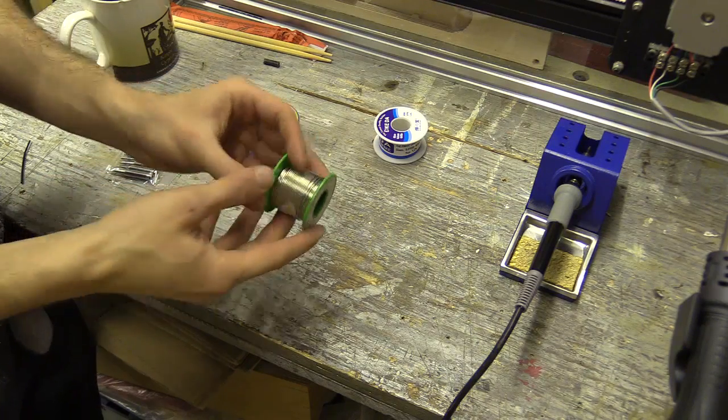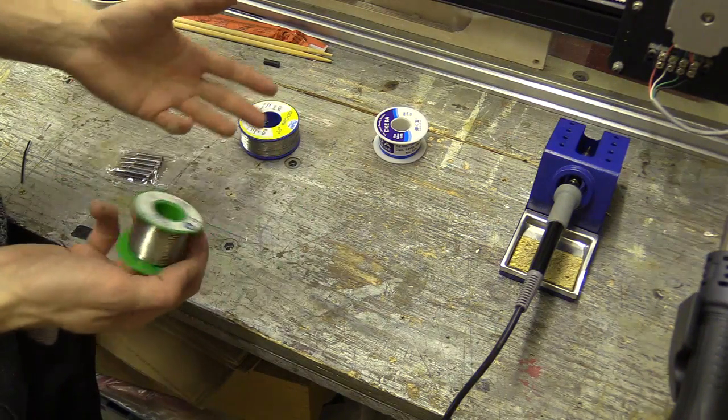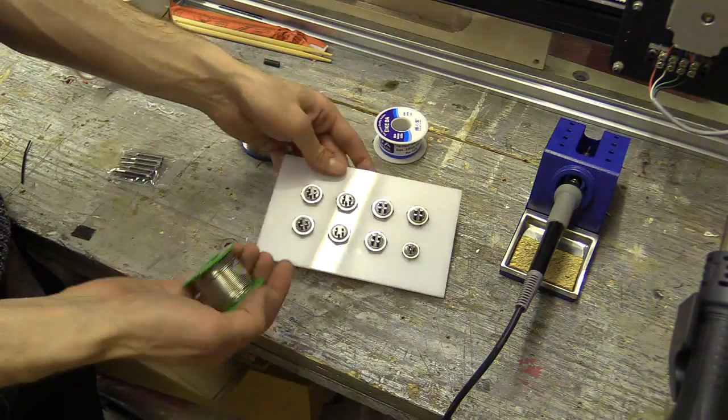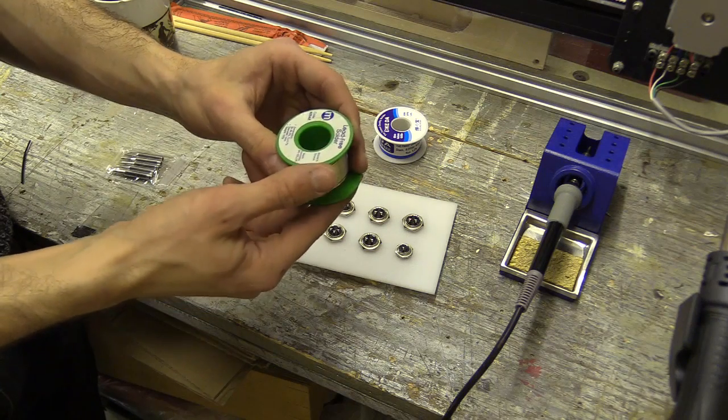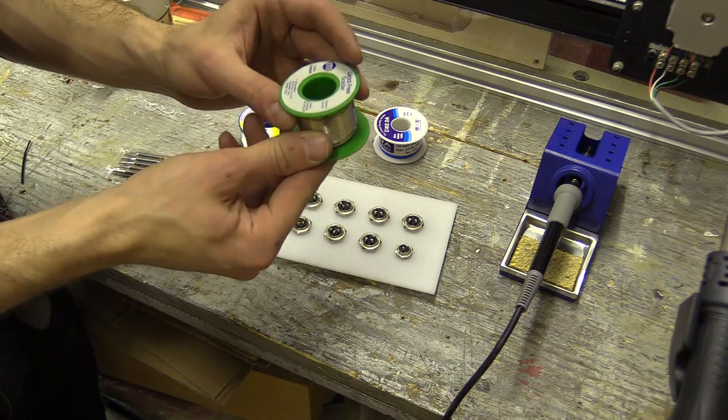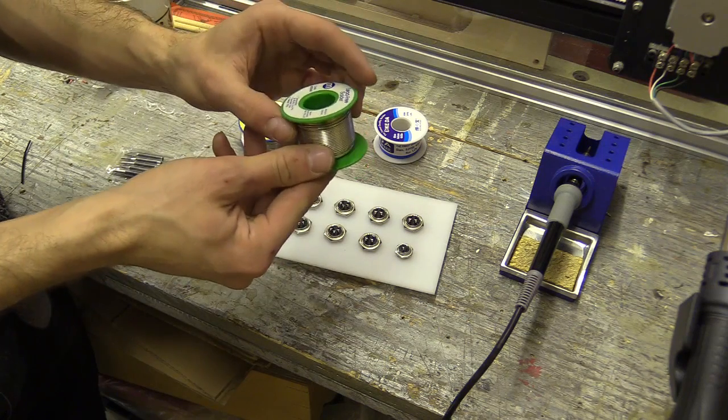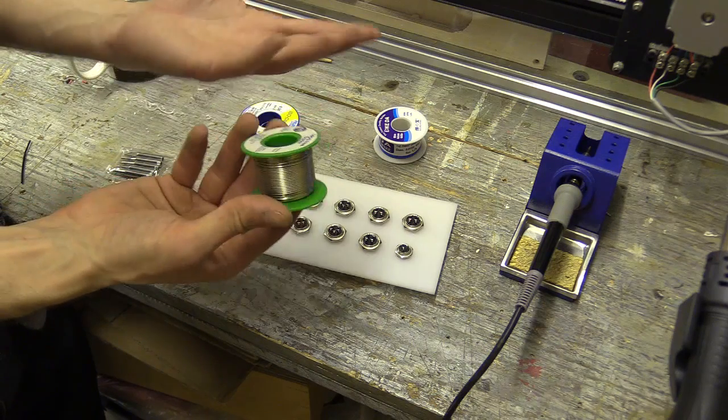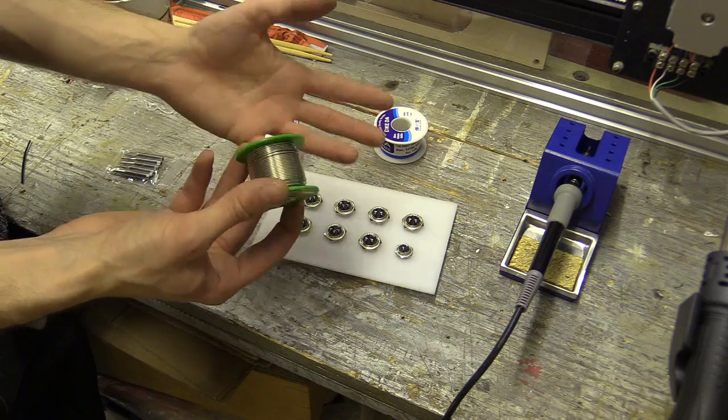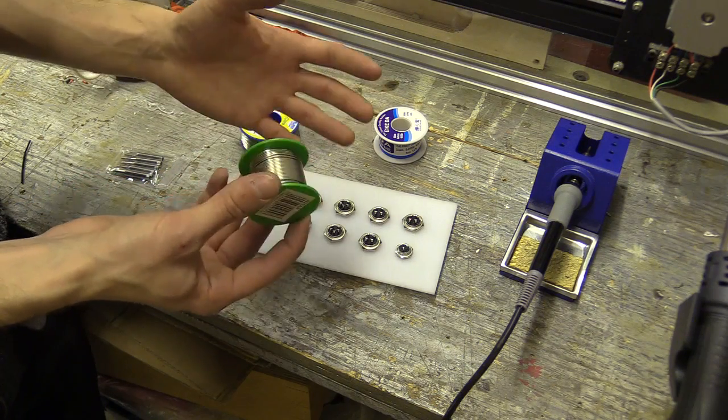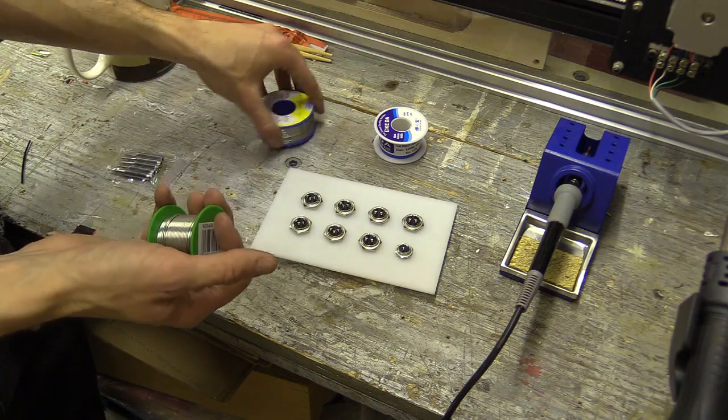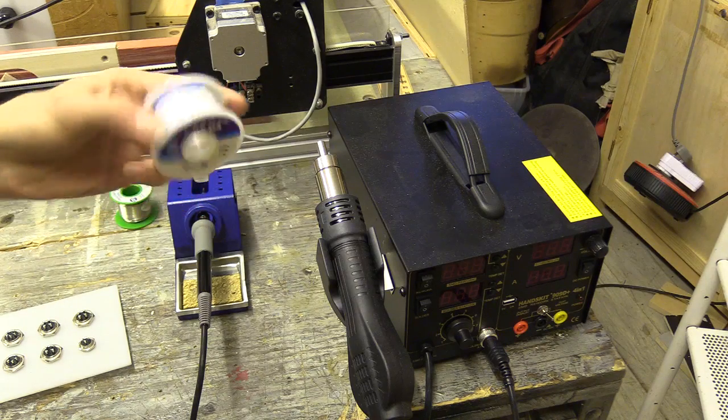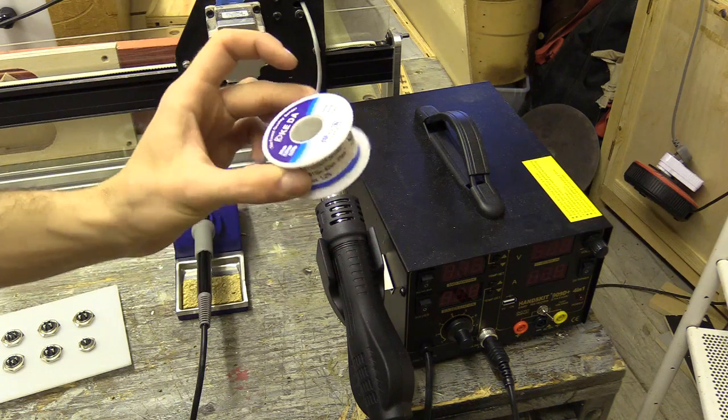This is the solder that I've been using to attempt to wire the panel connection aviation sockets. This stuff I bought from Maplin some time ago, and it's 1mm lead free solder. I'm assuming the melting temperature of this is a lot higher than leaded solder. I've always found this quite difficult to use.